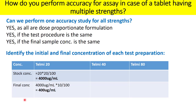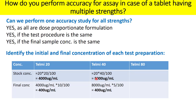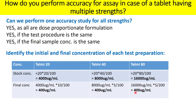Similarly, for Telmisartan 40 mg tablet, the initial stock concentration is 8000 µg/ml. But the final concentration of Telmisartan in the 40 mg preparation also remains 400 µg/ml — the same as for 20 mg. For Telmisartan 80 mg, the stock concentration is 16000 µg/ml, yet the final concentration again remains 400 µg/ml. The final sample concentration is the same for all three strengths.